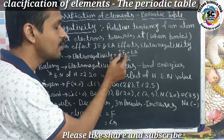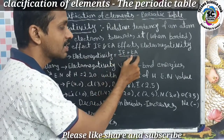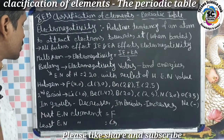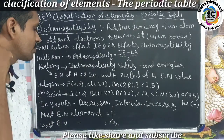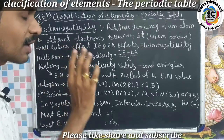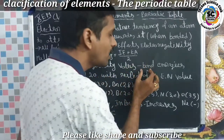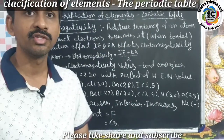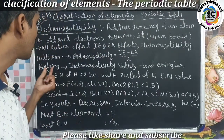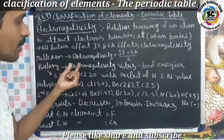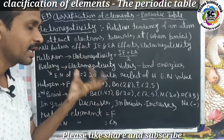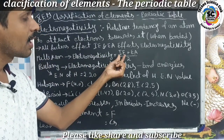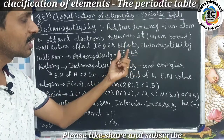According to the Mulliken scale, electronegativity is equal to ionization energy plus electron affinity, divided by two — that is, the average of ionization energy and electron affinity. This is what scientist Mulliken described for electronegativity.